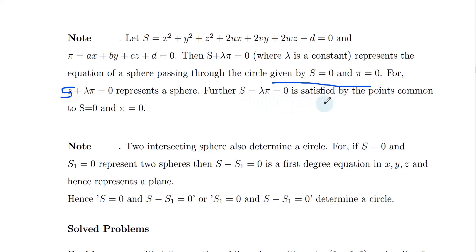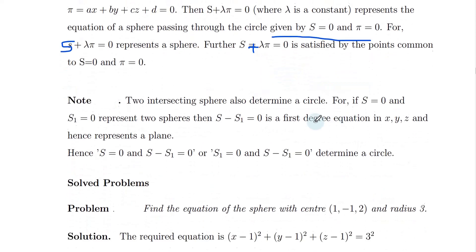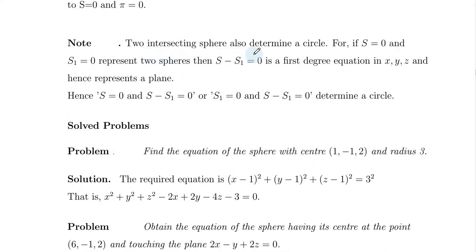S plus λπ equals zero is satisfied by all common points of S equals zero and π equals zero. One plane and one sphere intersect in the same circle. Two spheres also intersect in the same circle. So S minus S1 equals zero, together with S equals zero, represent two spheres intersecting in a circle.